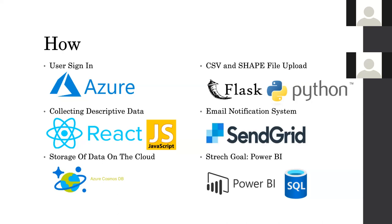So how did we make it? User sign-in uses Azure Active Directory with the NDUS credentials that everybody has. The front end for collecting descriptive data was built using React and JavaScript. Our storage database is Azure Cosmos DB. The file upload back end was built with Flask and Python. Our email notification system for when somebody uploads a file was built using SendGrid. And for our stretch goal, we integrated Power BI using a SQL API with Azure Cosmos DB.